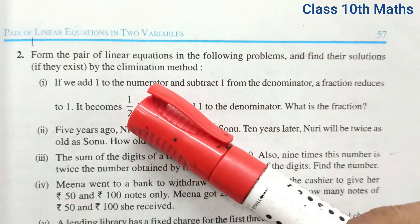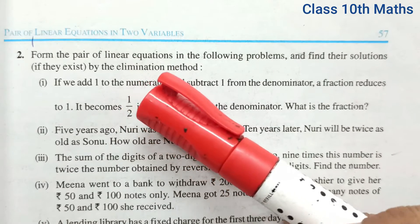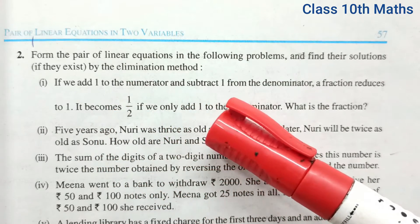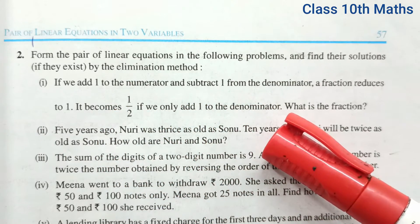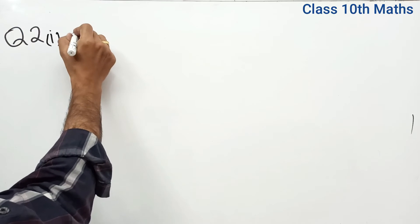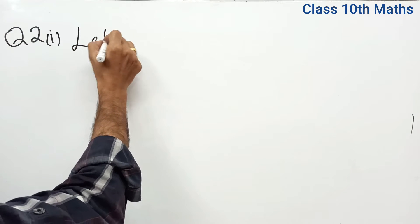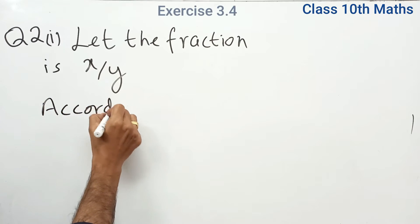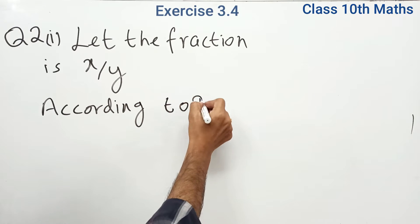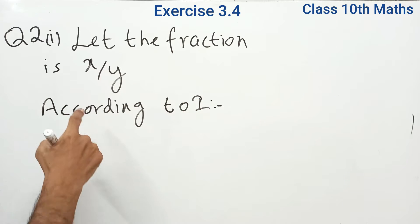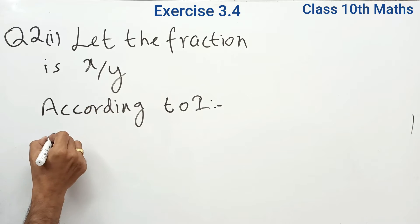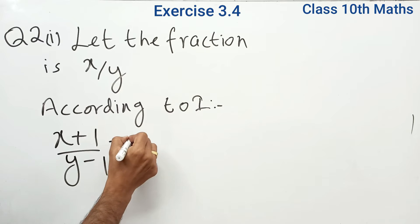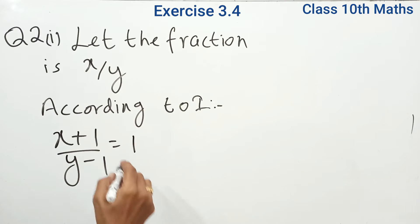In the first fraction, add 1 to the numerator and subtract 1 from the denominator — that gives (x+1)/(y−1). And in the second case, just add 1 to the denominator. Suppose the fraction is x upon y. Now, from the first condition: if 1 is added to the numerator and 1 is subtracted from the denominator, i.e., (x+1)/(y−1) becomes 1.